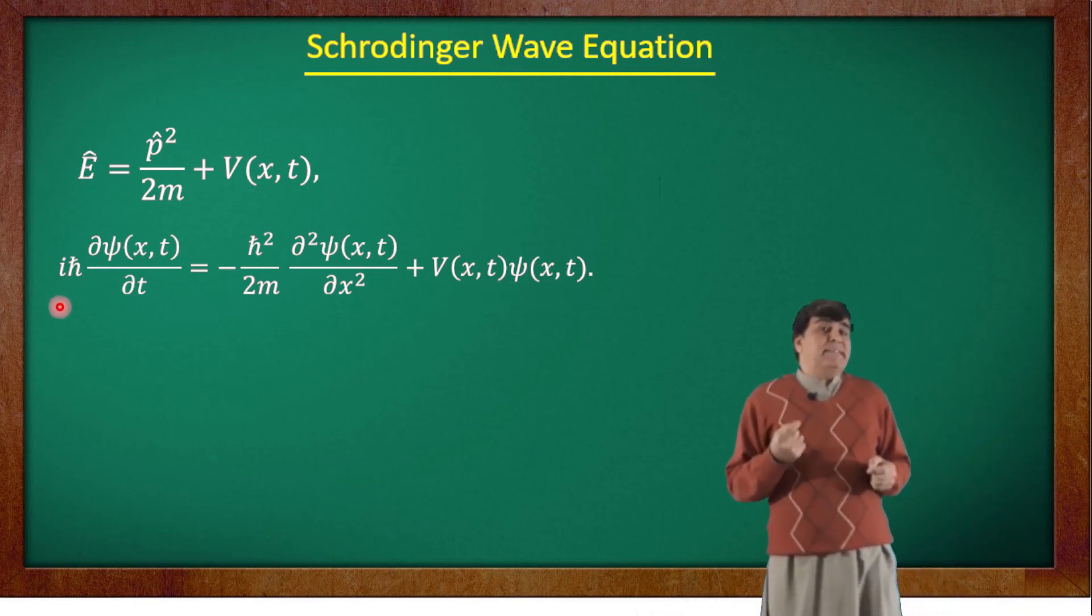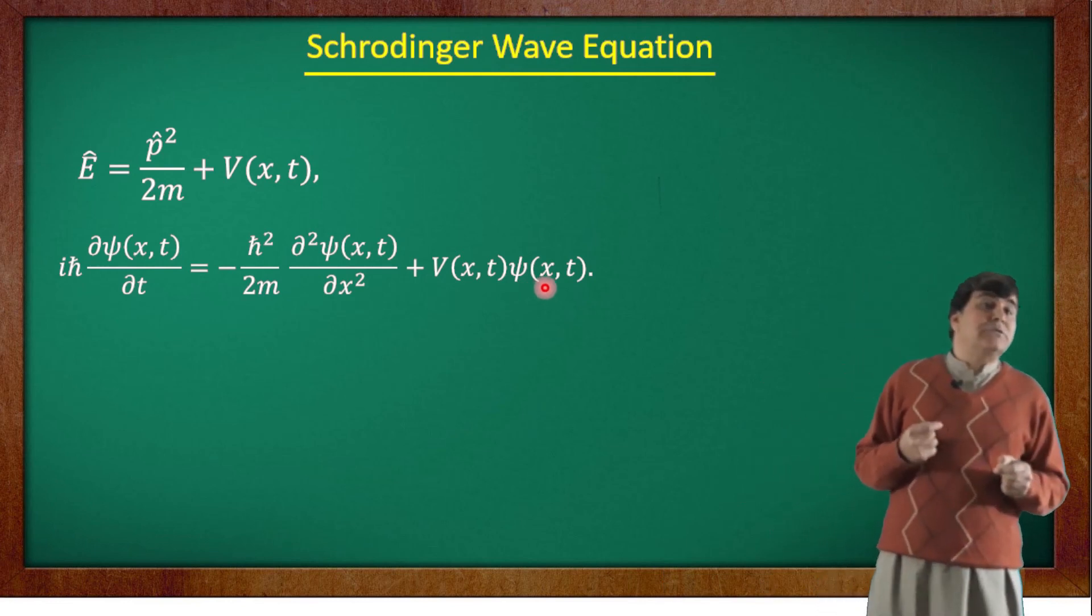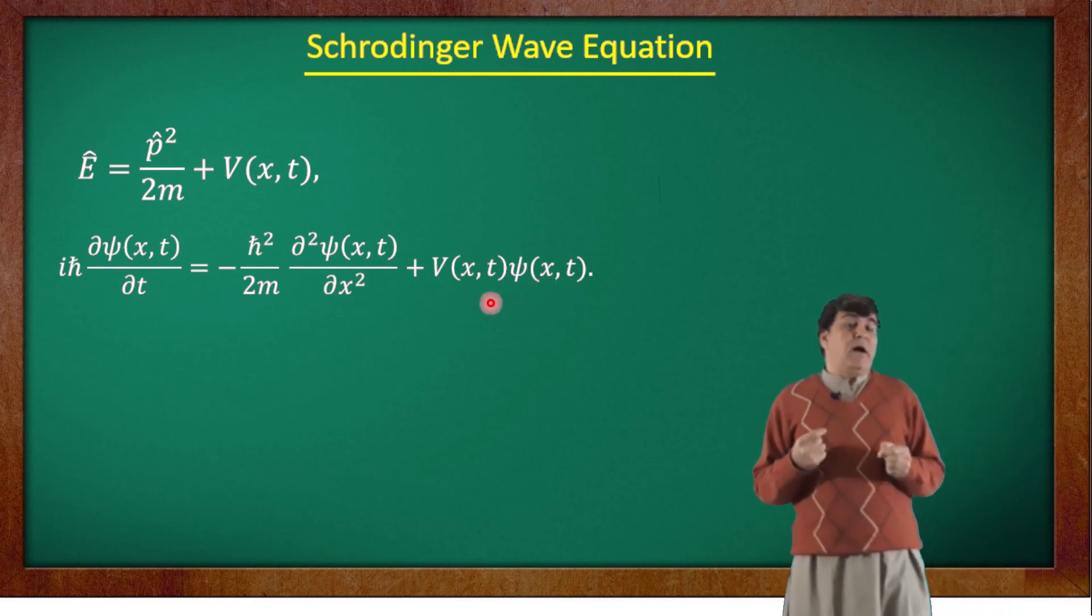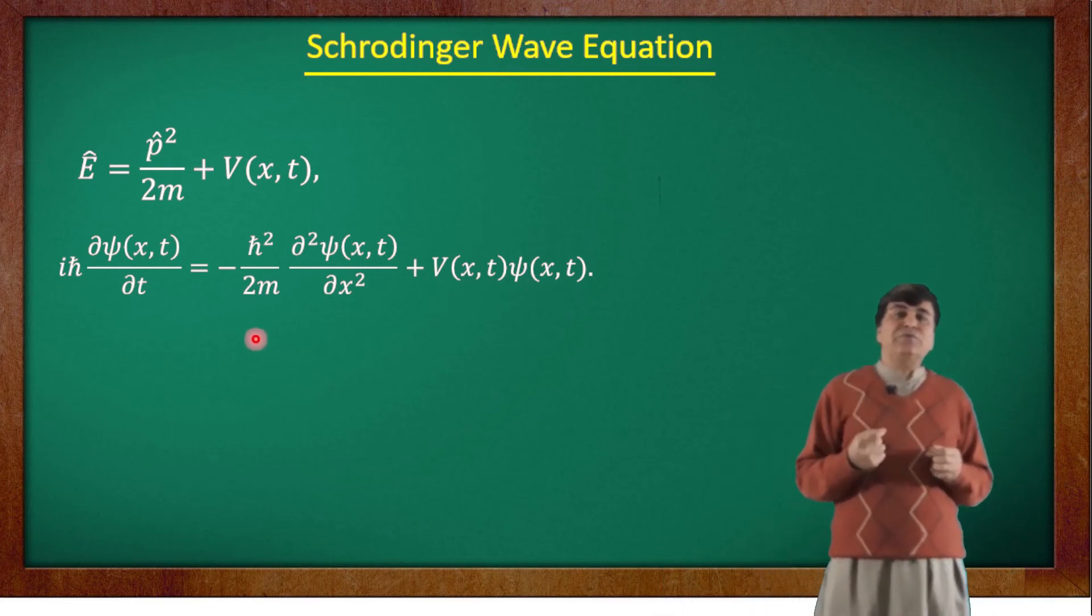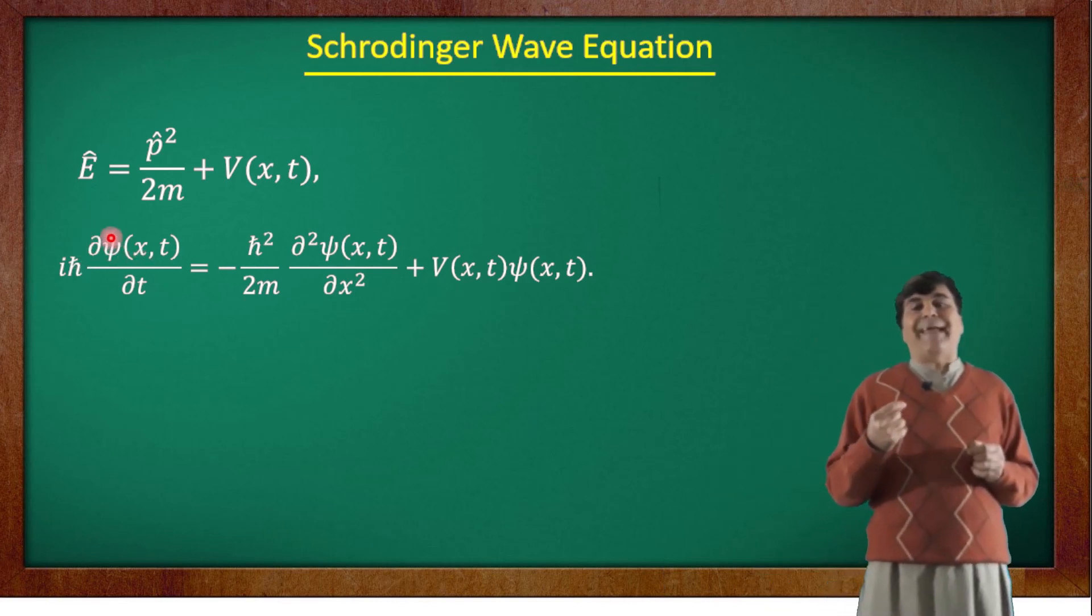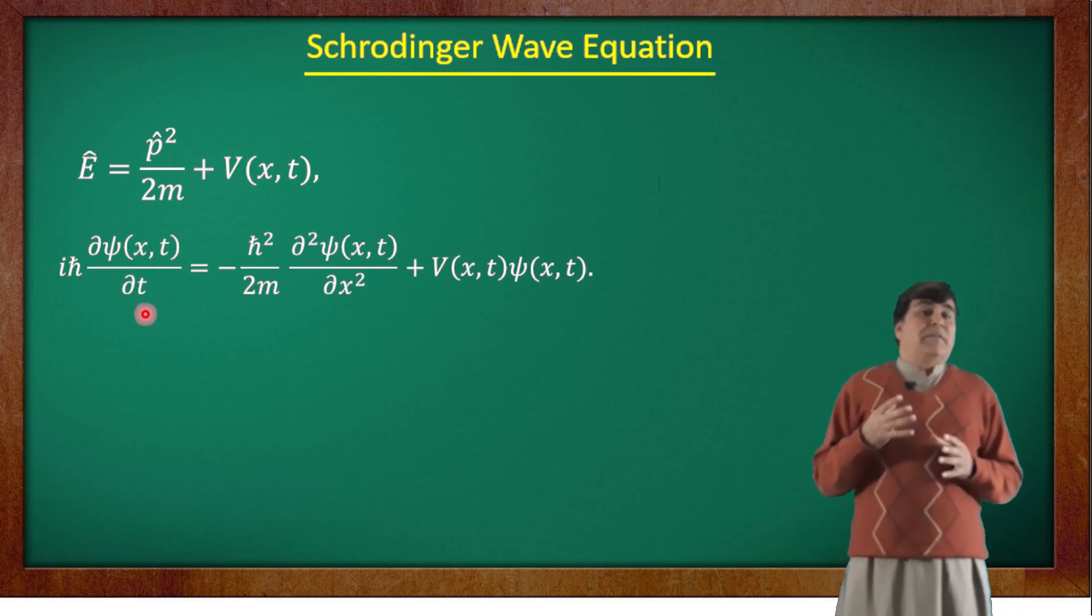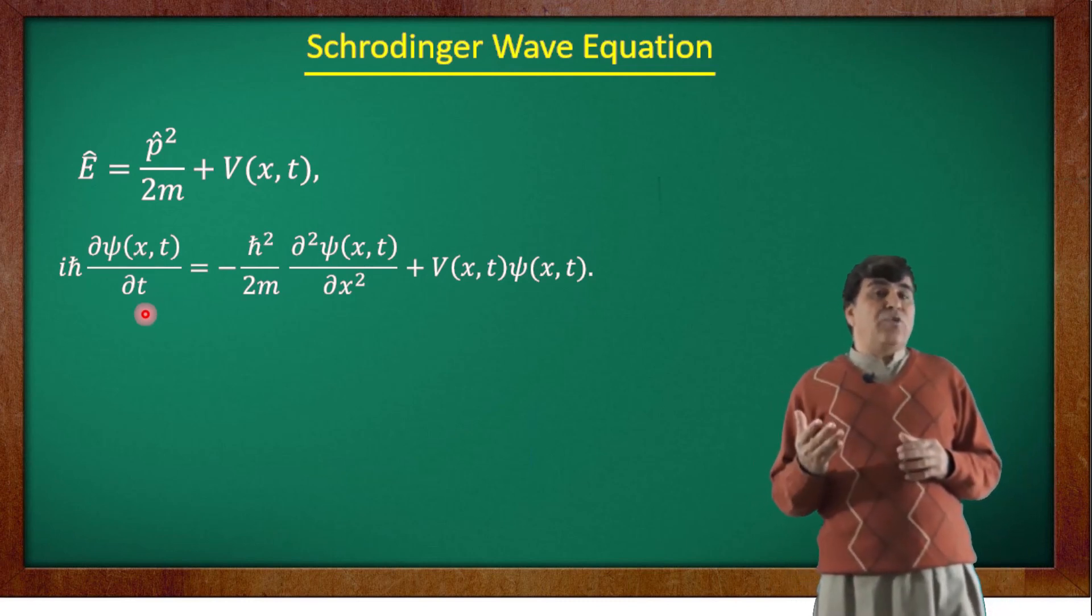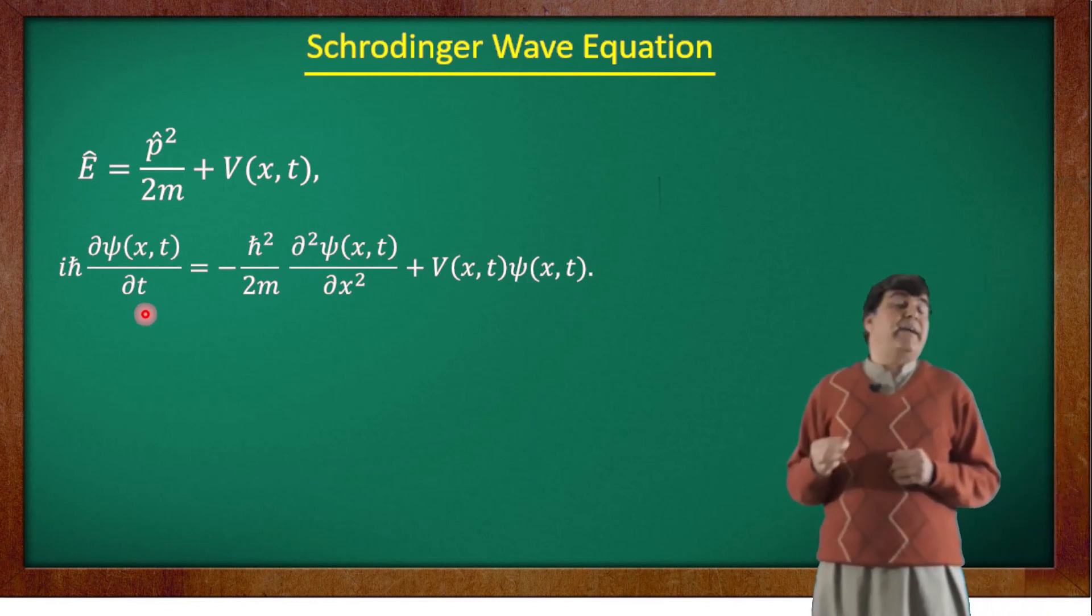This is the basic dynamical equation of quantum mechanics which generalizes Newton's second law. However, unlike Newton's second law which has two time derivatives, this equation is linear in the time derivative. It means that the knowledge of the wave function at time t=0 is enough to completely determine the final wave function ψ(t) at a later time t.